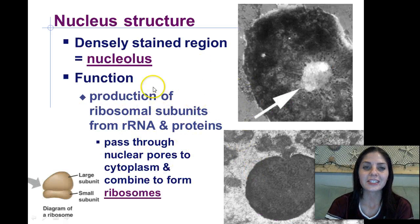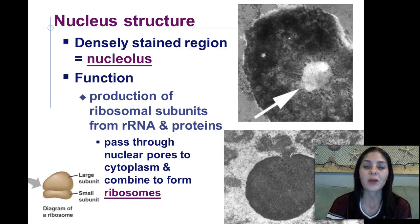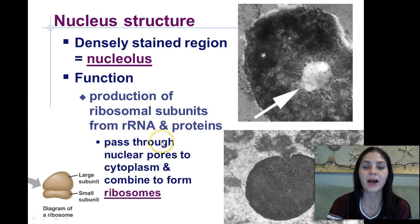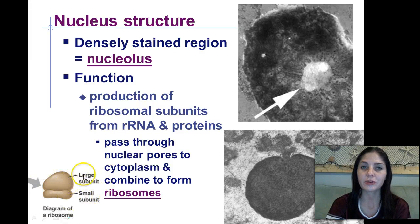The densely stained region right here is called the nucleolus. The function of the nucleolus is to produce ribosomal subunits — they form ribosomal RNA and proteins. These are what pass through the nuclear pores to the cytoplasm, and they combine to actually form the ribosomes themselves. So the ribosome is composed of ribosomal RNA and proteins.